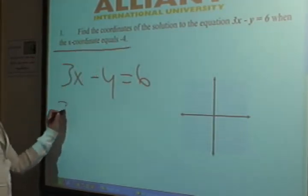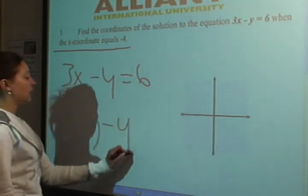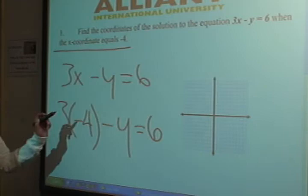So here we have x equals negative 4. Let's plug it in. 3 times negative 4 minus y equals 6. And now we want to solve for y.